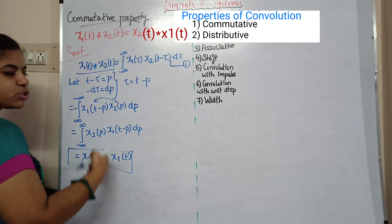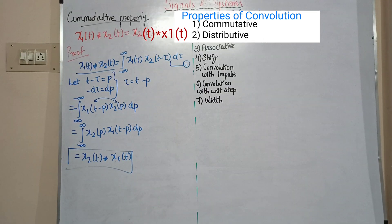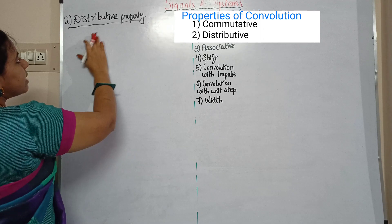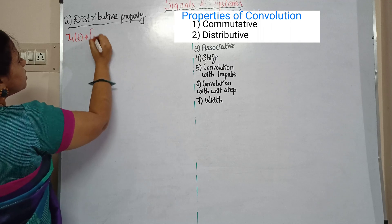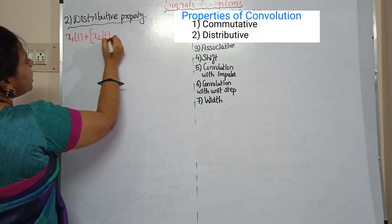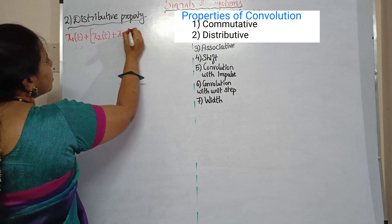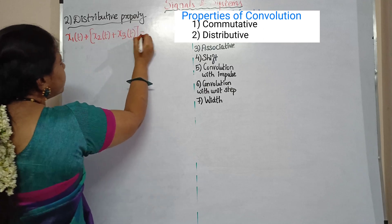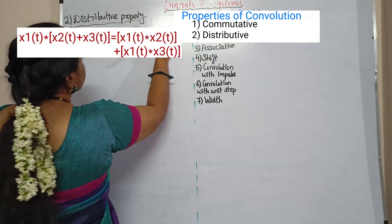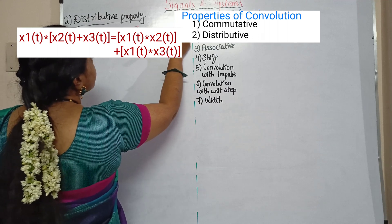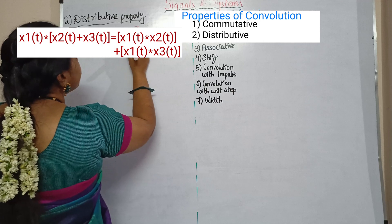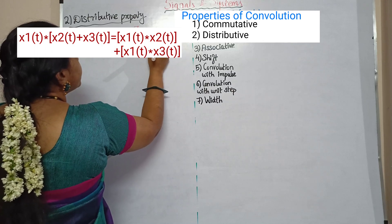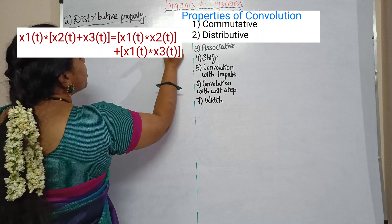This is how we prove the commutative property. So, for the distributive property: x1 of t convolution, x2 of t plus x3 of t, equals x1 of t convolution x2 of t, plus x1 of t convolution x3 of t.